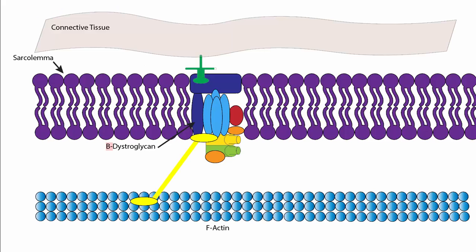Here is our healthy muscular cell membrane that has dystrophin. There are some important labels here. We have the sarcolemma, the β-dystroglycan protein, the F-actin. But the most important one that I want to point out is dystrophin.